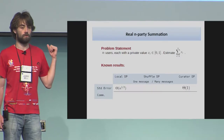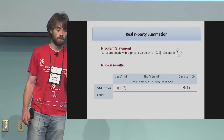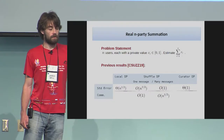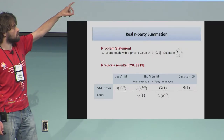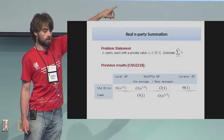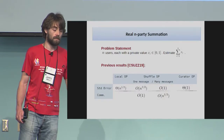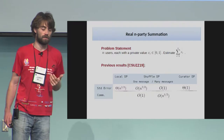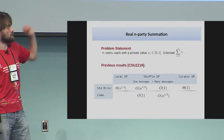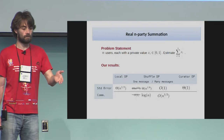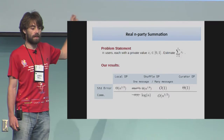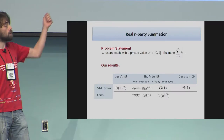For real n-party estimation — each user has some number in [0,1] and we want to estimate the sum — previous work by Balle et al. showed a slight improvement in the one-message model but not in the asymptotics. They showed that if you have square root n one-bit messages per person, all shuffled together, then you can achieve the error of the curator model. We look at what happens when you can only put one message in, and in that case we show that with just one message of log n bits you can achieve a standard error of n to the one-sixth — so variance n to the one-third — and you can't do better than that.